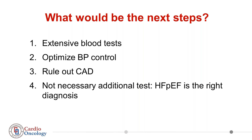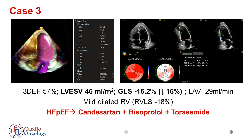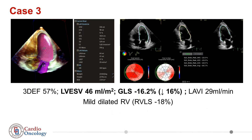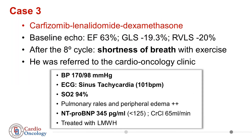A suggestion from the audience was cardiac MRI, in the context of heart failure with preserved EF and multiple myeloma — to rule out amyloidosis. The suspicion of amyloidosis was not very high. The strain pattern was probably not typical for amyloidosis, though it does not rule it out. Also, the level of NT-proBNP was not very high; patients with cardiac amyloidosis generally have higher BNP levels. We performed a cardiac MRI to rule out amyloidosis and to have more information about what was happening.